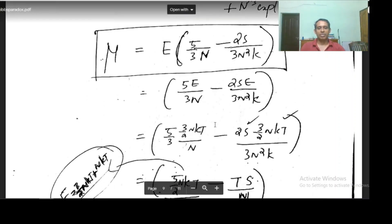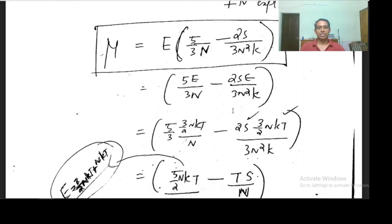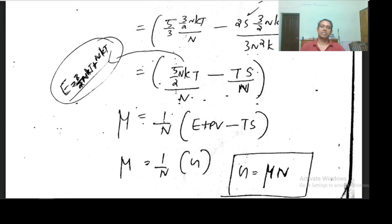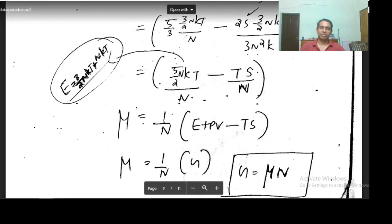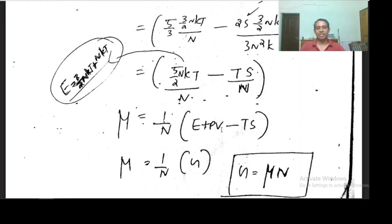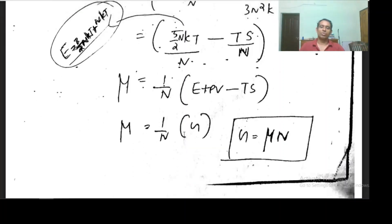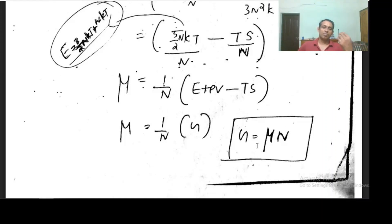Substituting E = 3/2 nkT, I will get (5/2)nkT/n here and Ts/n here, giving mu = (1/n)[E + (5/2)nkT − TS]. Now 5/2 nkT equals e + pv because E = 3/2 nkT and pv = nkT. So this is (E + pv − TS)/n, and since G = E + pv − TS, we get mu = G/n, or G = mu·n.